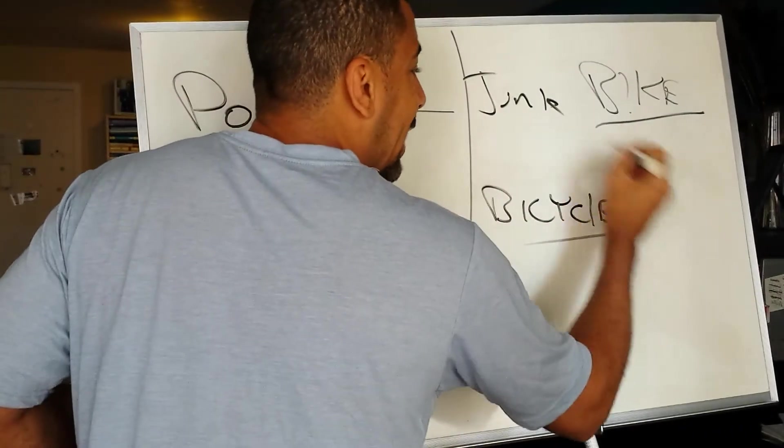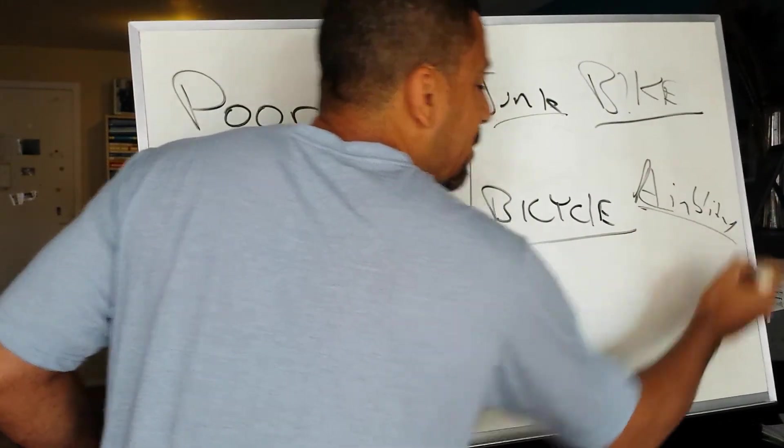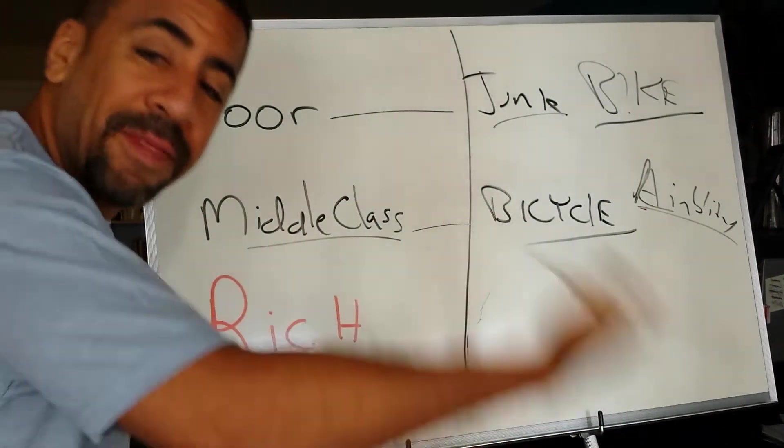So they buy a bicycle, and it becomes not junk, but a liability. A liability because every month they have to pay for that bike, and every month they're on it.